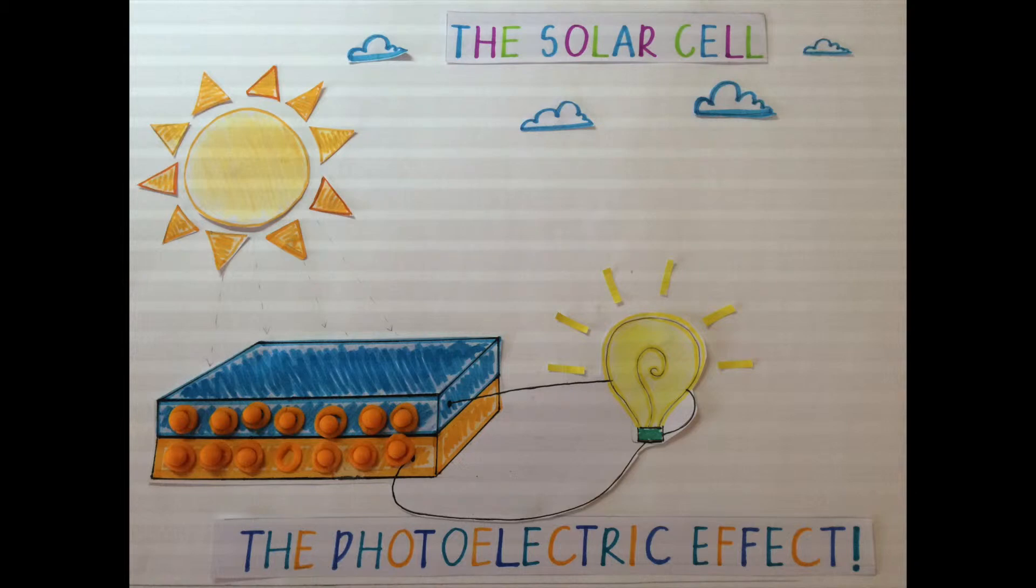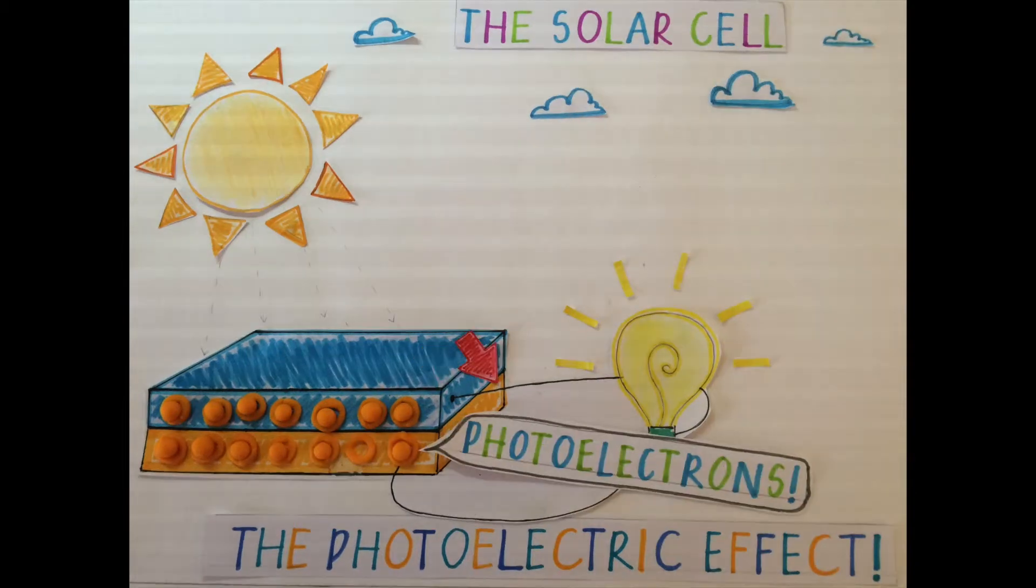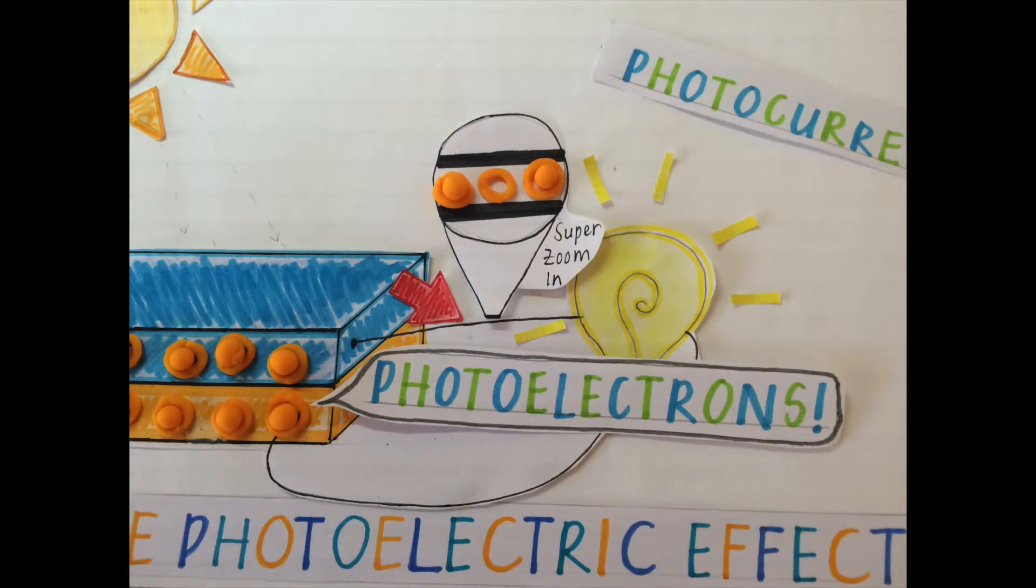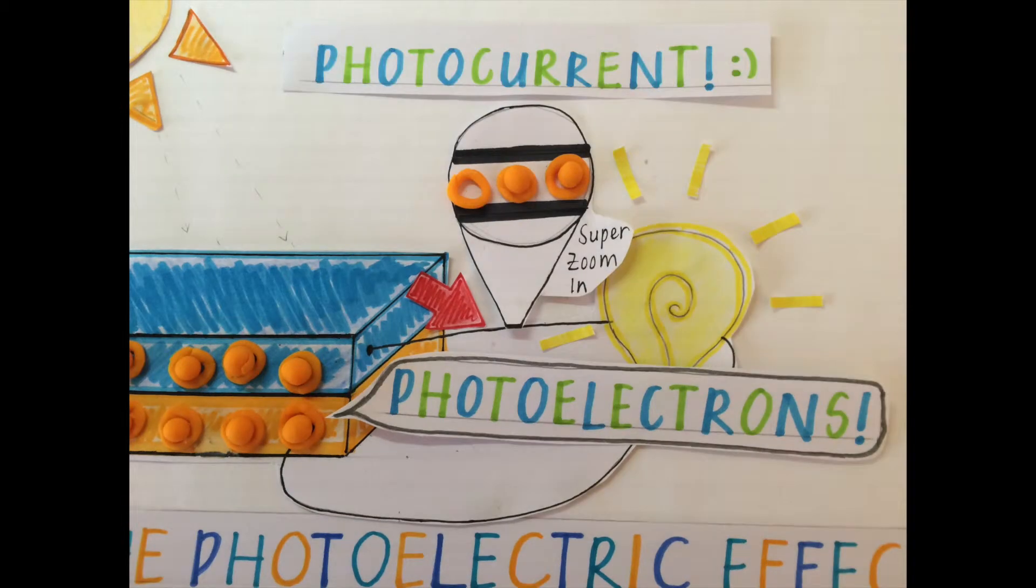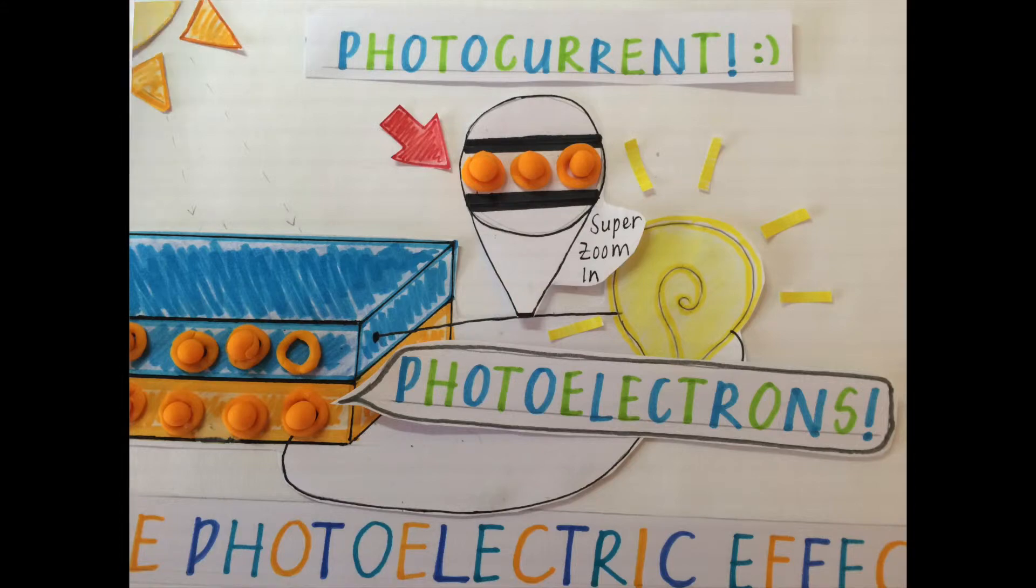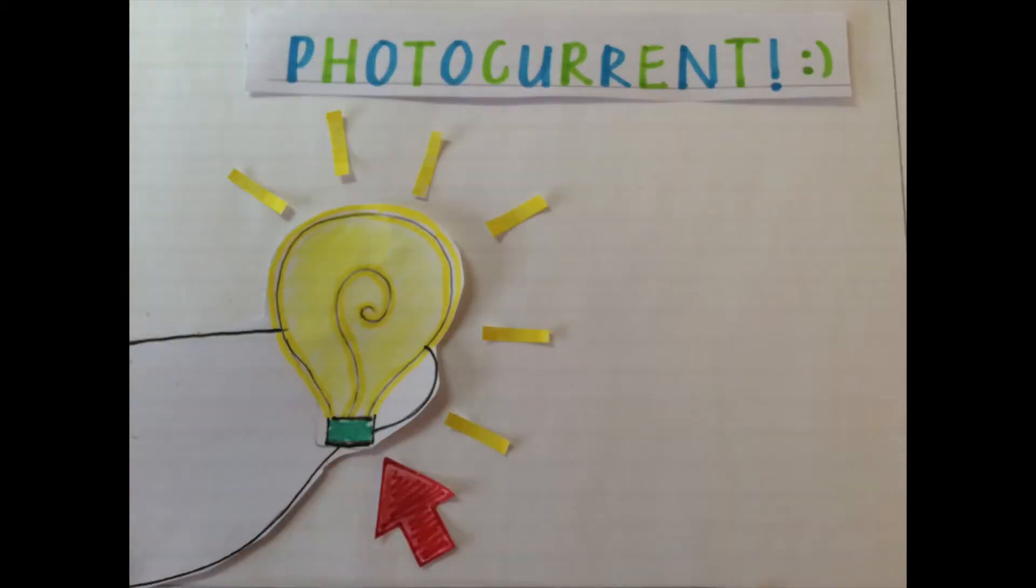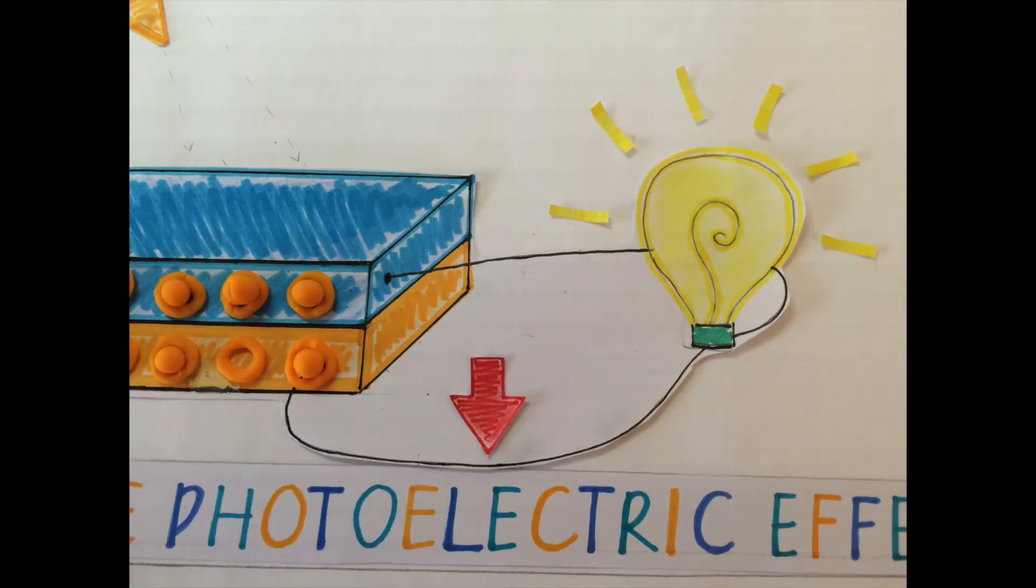The electrons that have been liberated by the photons are now called photoelectrons. The photoelectrons flow from the N-type silicon into the external circuit as photocurrent. The photocurrent flows through the external circuit to do work. In this case, allow the light bulb to glow before returning to the P-type silicon.